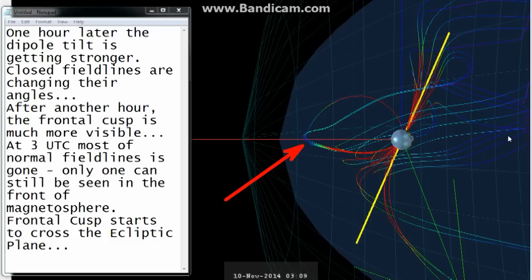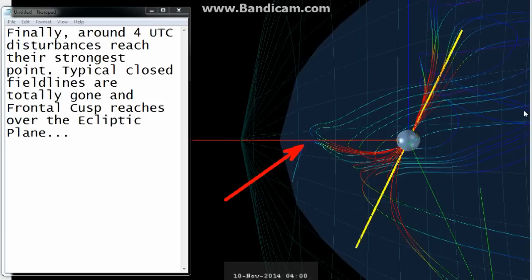At 3 UTC most of the normal field lines are gone. Only one can still be seen in the front of the magnetosphere. The frontal cusp starts to cross the ecliptic plane. Finally, around 4 UTC disturbances reach their strongest point. Typical closed field lines are totally gone and the frontal cusp reaches over the ecliptic plane.